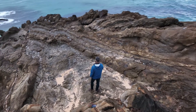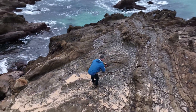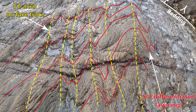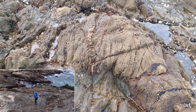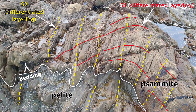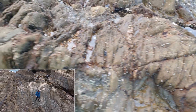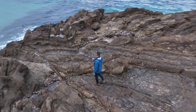This is the F2 fold here. You can see a whole bunch of folds on the ground, and then you can see the S2 cleavage and differentiated layering here. That's parallel to the axial plane of the F2 fold — pretty neat.